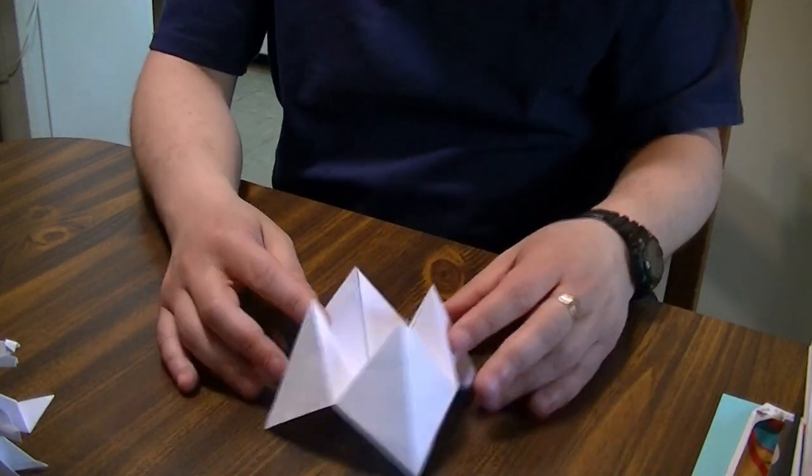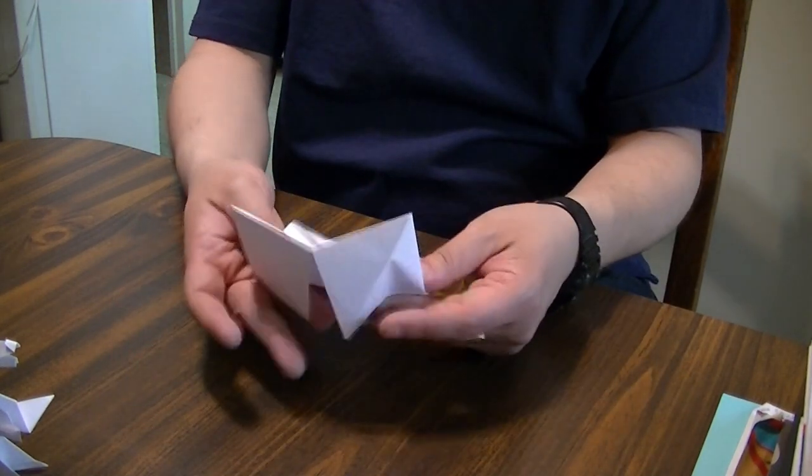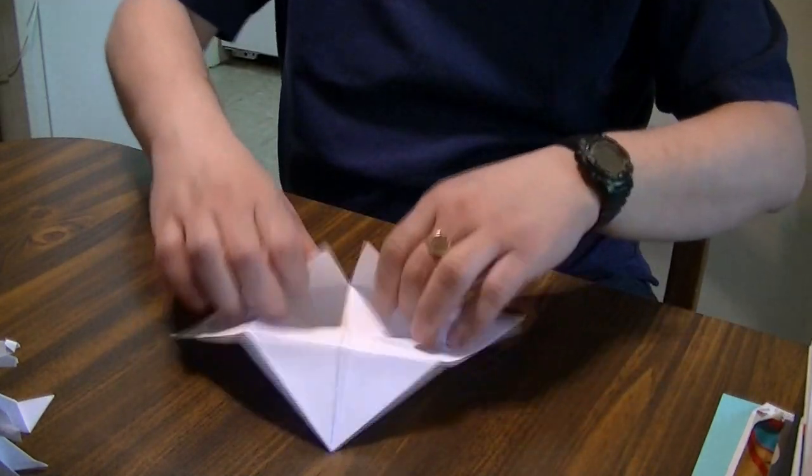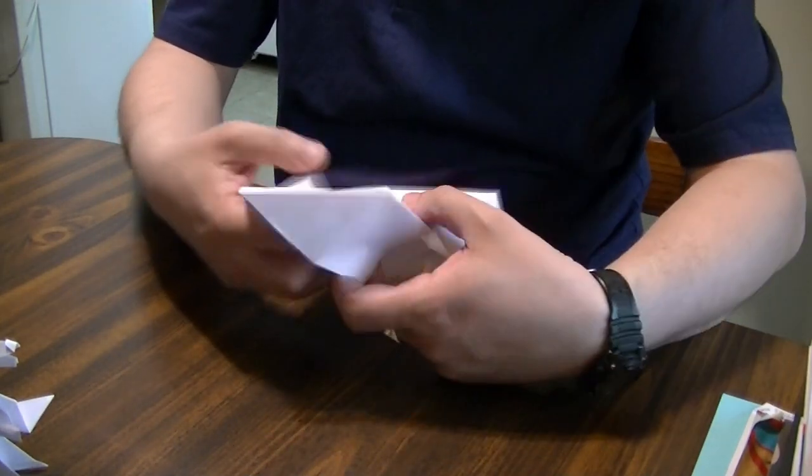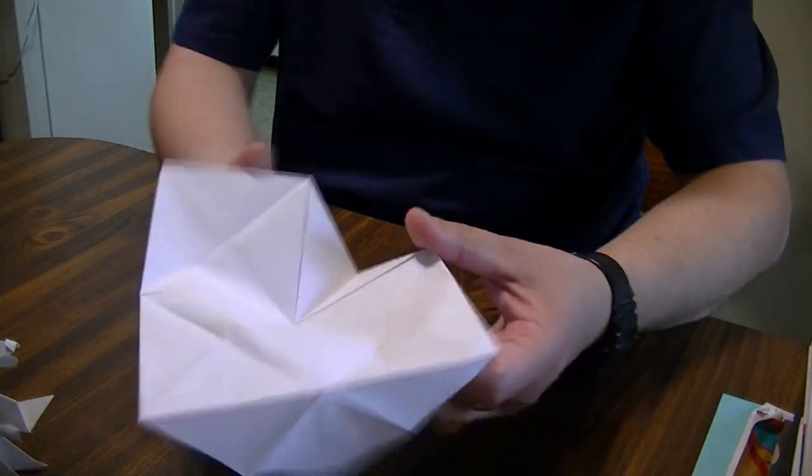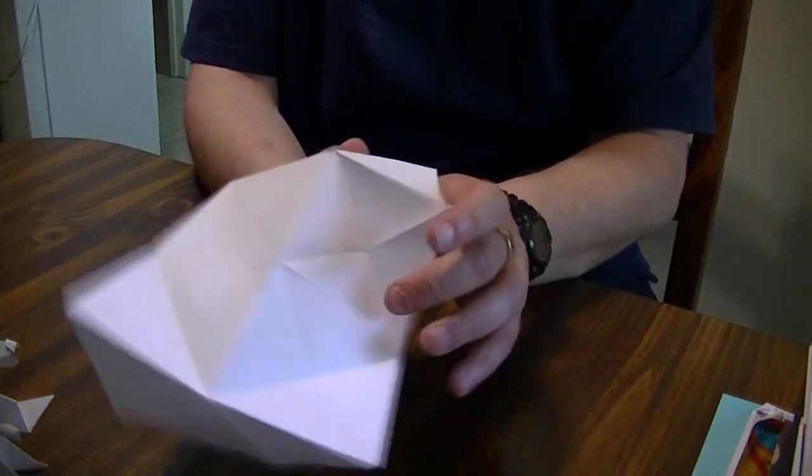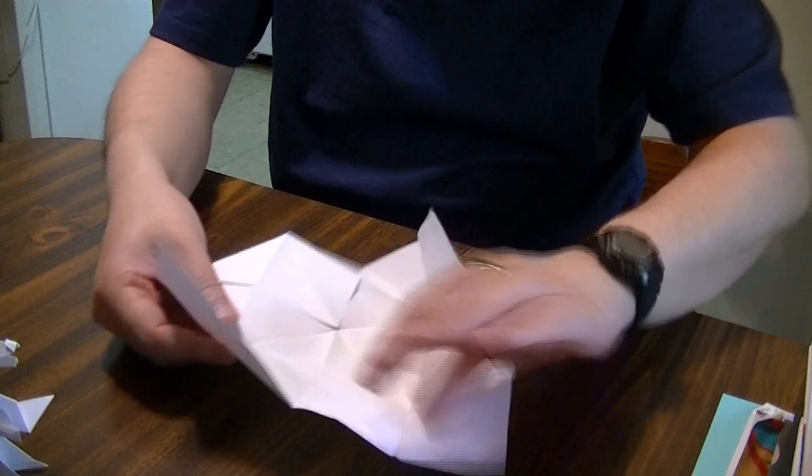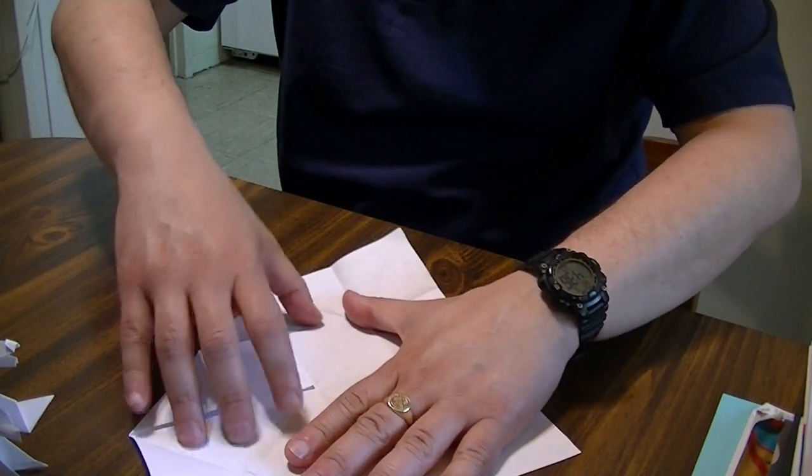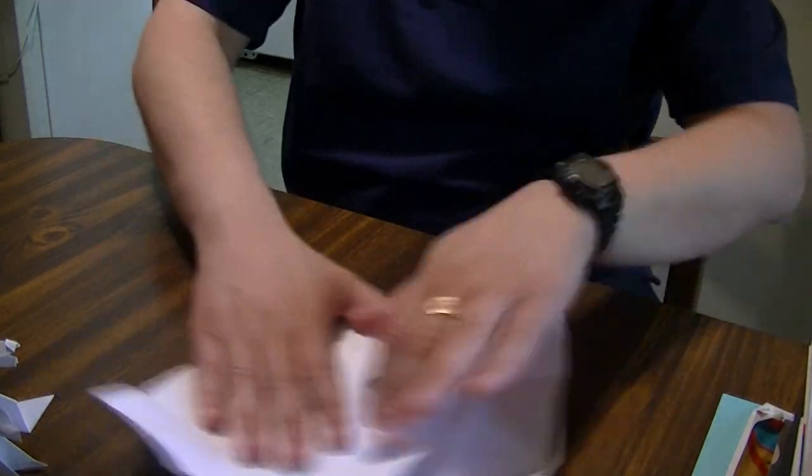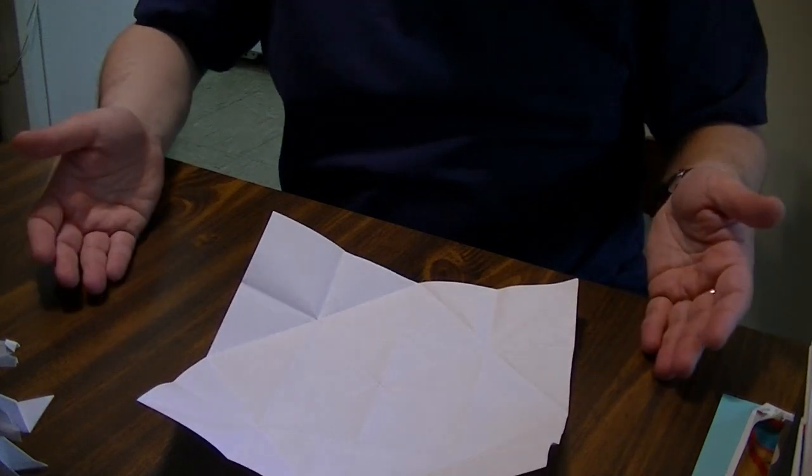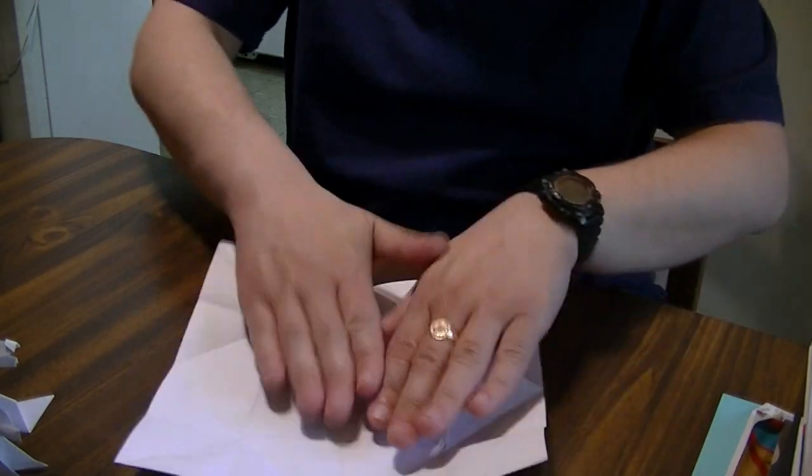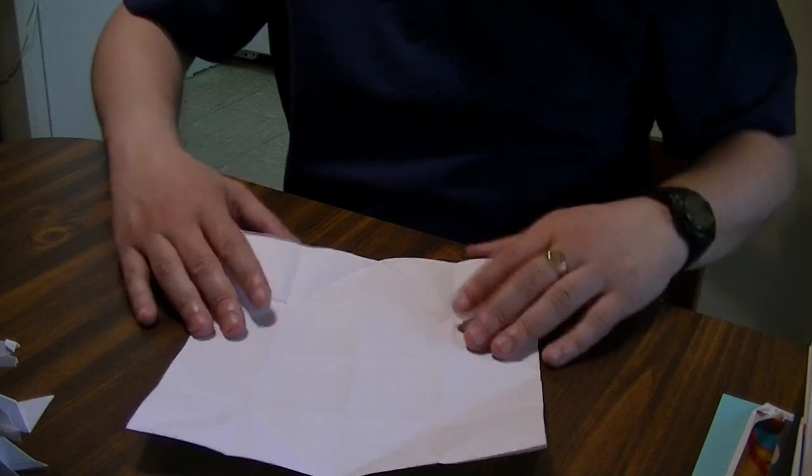Now, we're going to completely unfold this back into a flat square. And no, I am not trolling you. The whole reason why we made a fortune teller was basically to create all of these creases. Remember what I said, creases are what make your origami look straight. So now we have all the creases that we're going to need for our dragon wings.